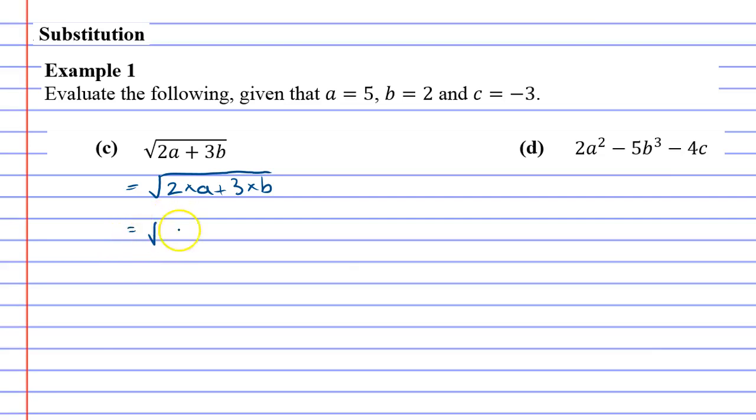Now we're going to substitute. A is 5, and B is 2. When you do these, because they're all under the line, you've got to do all your multiplication and addition before you do your square root. So 2 times 5 is 10, 3 times 2 is 6. We multiply first, and we add next.